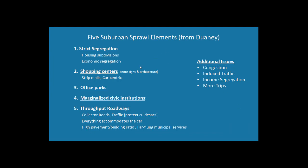Duany lays out five elements of sprawl. These aren't necessarily things somebody sets out to create, but what tends to happen. First, you have strict segregation of different functions — housing subdivisions where homes are from a certain price point to another, and God forbid somebody build a smaller house because it's going to hurt property values. It's a very utilitarian, modernist division of the world into different sectors, with not a lot of natural interaction among different pieces — lots of segregation along function lines and economic lines.